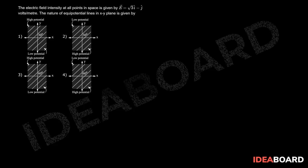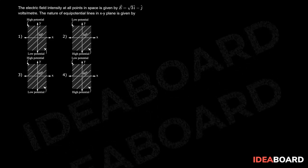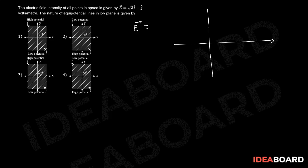In this question let us make the diagram clearly. The diagram will look like this. They are saying that electric field vector E is root 3i minus j, that means root 3i.